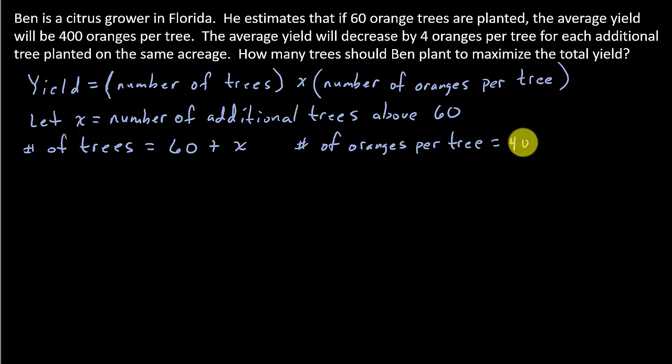and then for each additional tree, it decreases by 4 oranges per tree, so that would mean 400 minus 4 times x.